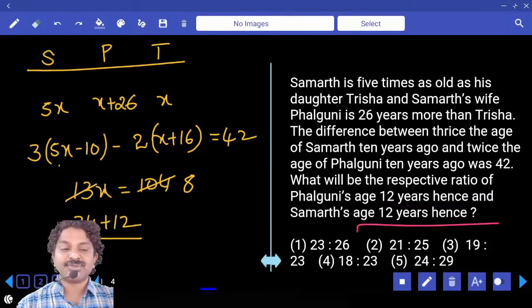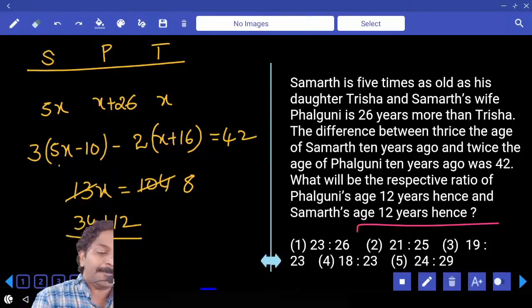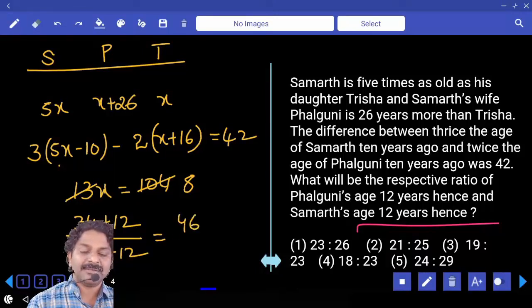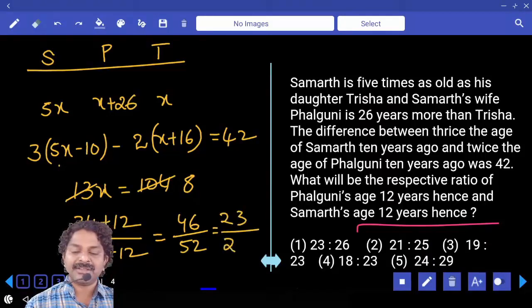Samarth's age 12 years hence - present age of Samarth 5X, that is 5 into 8, 40. After 12 years, plus 12. 46 by 52, answer 23 by 26.